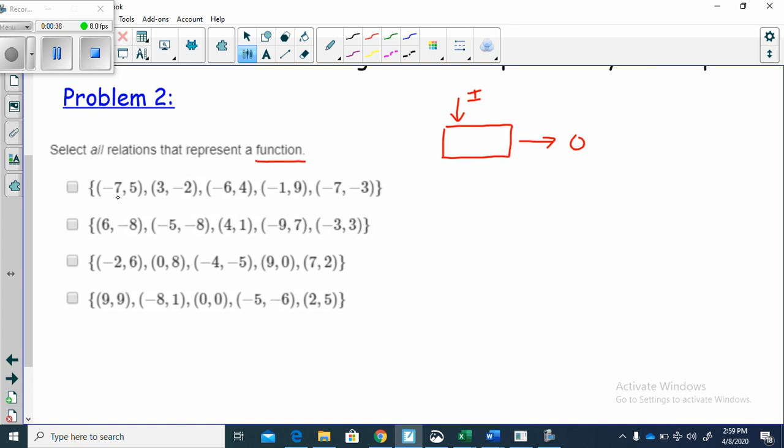So we look at our inputs. We see if our inputs repeat. Here we have negative 7, 3, negative 6, negative 1, and negative 7. Okay, the negative 7 is repeating.